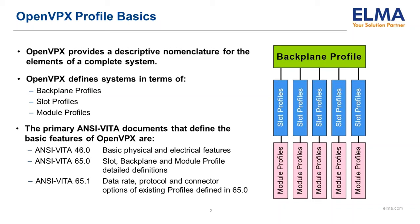To simplify the addition of new module and backplane dash numbers to existing backplane and module profiles, VITA 65 was broken into two documents in 2017. The primary document, VITA 65.0, has all the basic definitions of existing backplane slots and module profiles. VITA 65.1 was developed to define all backplane, slot, and module dash numbers, as well as descriptions of specific VITA 66 and 67 modules.